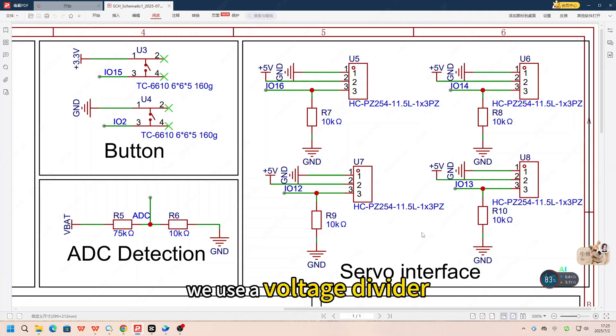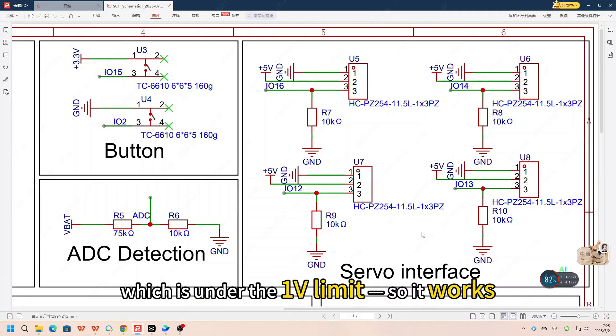To safely read this with ADC, we use a voltage divider. Using Ohm's law, we calculate this resistor ratio. In our case, the total resistance is 85K ohm, with 10K ohm on the lower side. 10 divided by 85 equals 0.117, and 8.4V times 0.117 equals 0.98V, which is under the 1V limit, so it works.